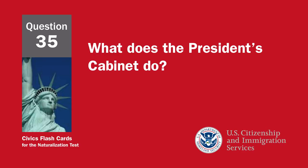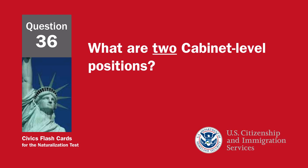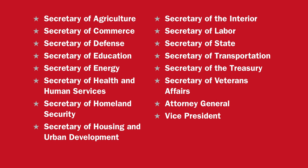What does the president's cabinet do? Advises the president. What are two cabinet-level positions? Secretary of Agriculture, Secretary of Commerce, Secretary of Defense, Secretary of Education, Secretary of Energy, Secretary of Health and Human Services, Secretary of Homeland Security, Secretary of Housing and Urban Development, Secretary of the Interior, Secretary of Labor, Secretary of State, Secretary of Transportation, Secretary of the Treasury, Secretary of Veterans Affairs, Attorney General, Vice President.